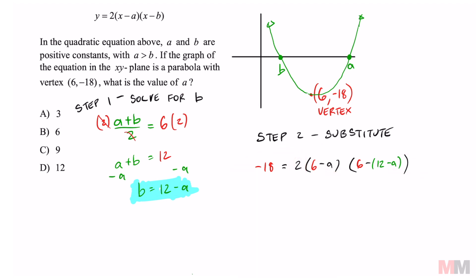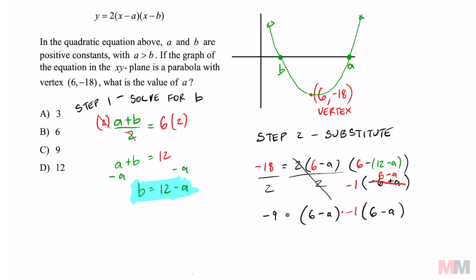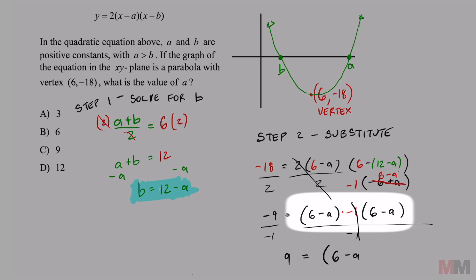This 2 right here, we can get rid of it right away by dividing by 2 on both sides. Since this is all multiplication, this right here is going to turn into -6 + a. In this binomial, you can factor out a -1, which is going to turn the inside into 6 - a. Divide both sides by -1. So that's going to get me 9 equals (6 - a) times (6 - a), which is the same as (6 - a)².